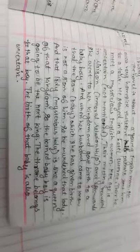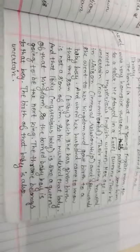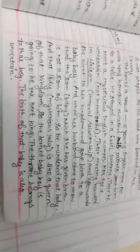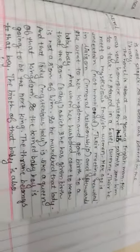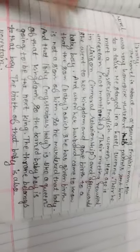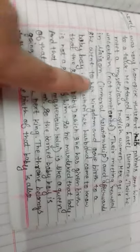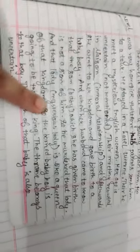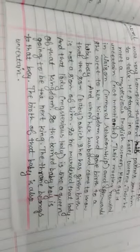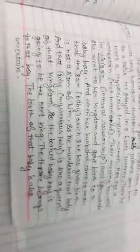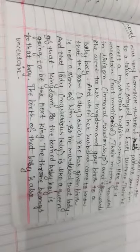The mysterious lady is like a queen of that kingdom, so the baby boy is going to be the next king. The throne belongs to that boy, but the birth of that boy is also uncertain. All the things are not clearly explained in this novel: where the lady came from, what is her age, which kingdom she went to, who is the husband, when and why he murdered her. All these things are uncertain.